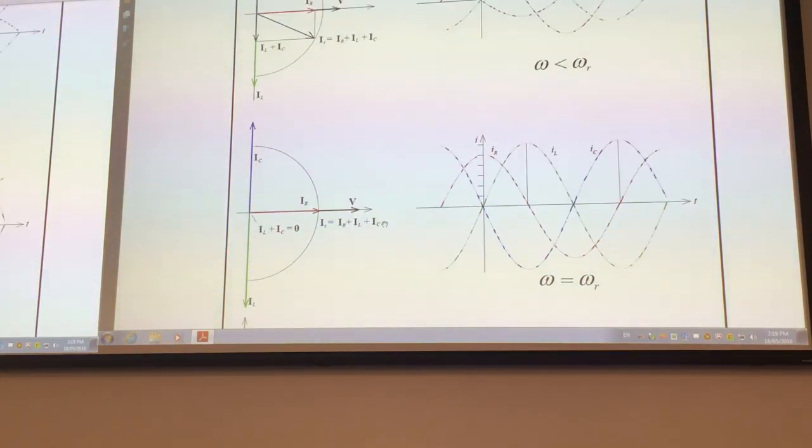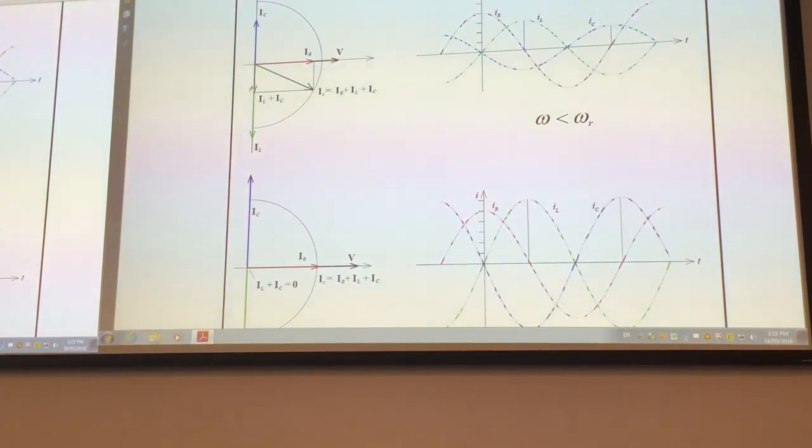Now, as you go to lower frequencies, when omega is less than omega r, these two vectors don't add up to zero. The current in capacitor and inductor are in anti-phase, but they have different amplitude. So there will be a vector which will not be lying on the horizontal axis. We used simple vector geometry to obtain the phases.